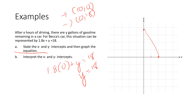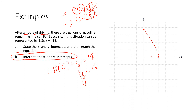The second part is to interpret the x and y intercepts. The x-intercept means that if Becca drives 10 hours, there will be zero gallons left in her car — she will be out of gas after 10 hours of driving. The y-intercept tells us that currently she has 18 gallons in her gas tank, because if she were to drive zero hours, she would have 18 gallons of gasoline still in her tank. That's how we interpret these intercepts when asked. Alright, that's it — I hope that was helpful. If you have questions, let me know, and we will check in tomorrow. Have a great day.